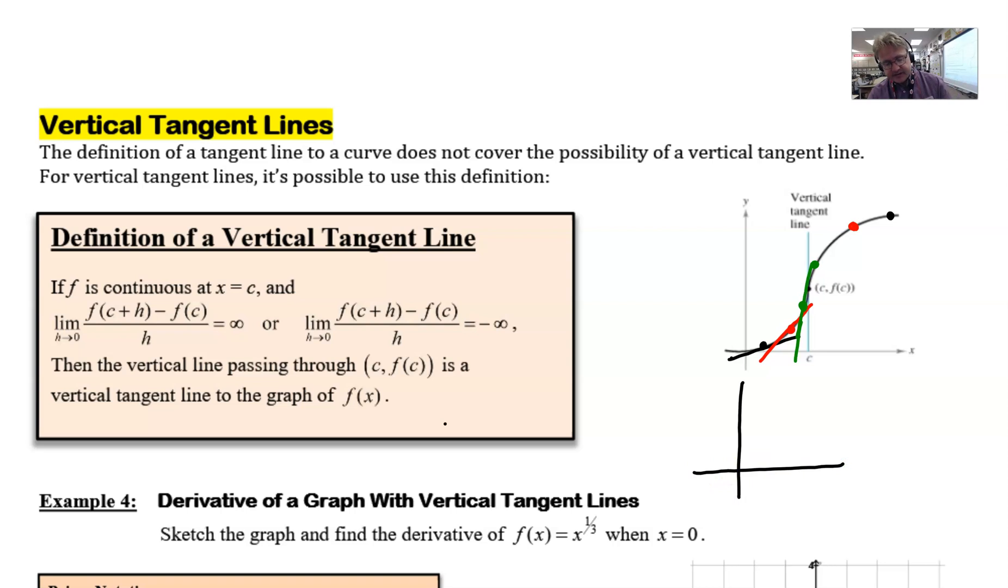Take note: the same thing could happen with a slope that's going to be negative infinity just as easily. In that situation, I may have a graph that looks something like this, and hopefully that is easy to see that your slopes as you're moving through tend to become negative infinity in size.